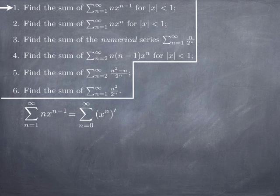When we look at the series starting at 1 of n·x^(n-1), the term n·x^(n-1) should remind you of the derivative of x^n. So you can think of it as a series of general term derivative of x^n, starting at 0, because when we differentiate x^0 we get 0, so we can start at 0 or at 1 — it doesn't really matter.